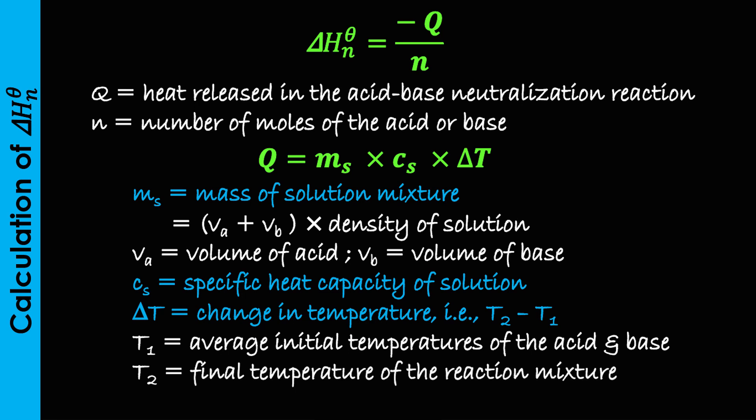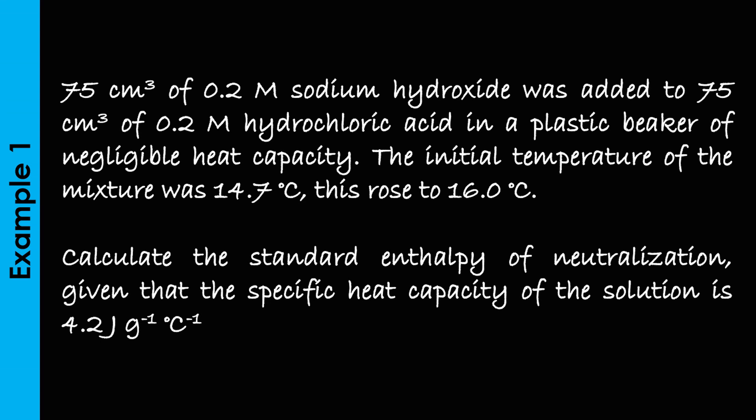Let's now see how to apply this formula in solving problems on heat of neutralization. Example 1: 75 cm³ of 0.2 molar sodium hydroxide was added to 75 cm³ of 0.2 molar hydrochloric acid in a plastic beaker of negligible heat capacity. The initial temperature of the mixture was 14.7 degrees Celsius, which rose to 16.0 degrees Celsius. Calculate the standard enthalpy of neutralization, given that the specific heat capacity of the solution is 4.2 joules per gram per degree Celsius.